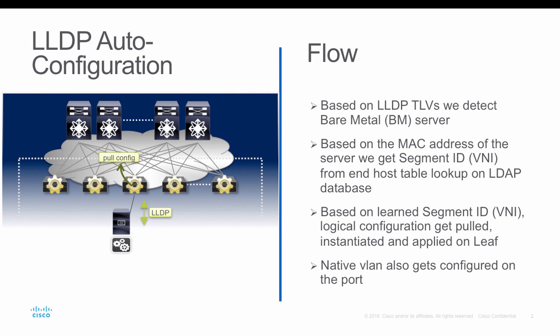One of the main use cases of LLDP auto configuration is integrating bare metal workloads. Bare metal workloads, as you already know, typically send untagged traffic. Using LLDP neighborship and TLV information, we use the MAC address and query the end host table inside Data Center Network Manager, or DCNM, to get the virtual network identifier or segment ID information.